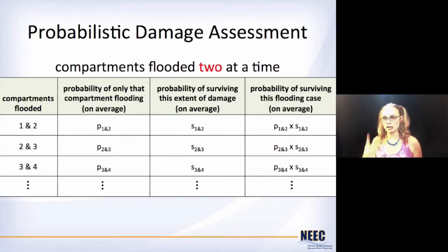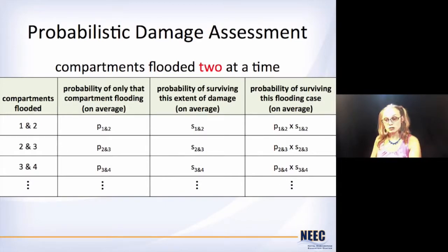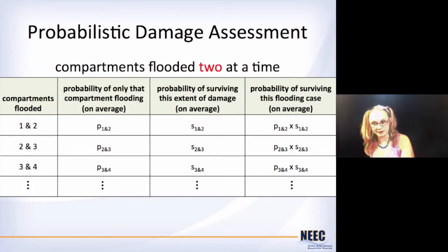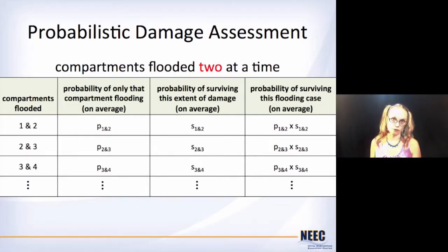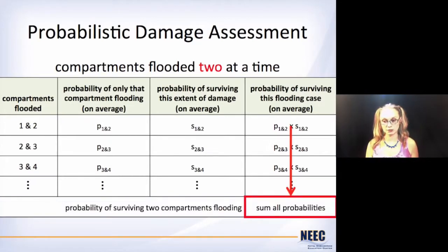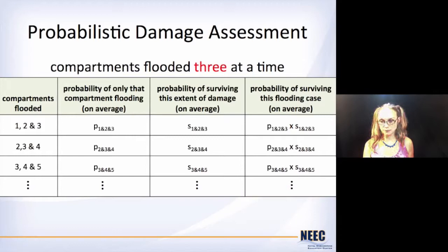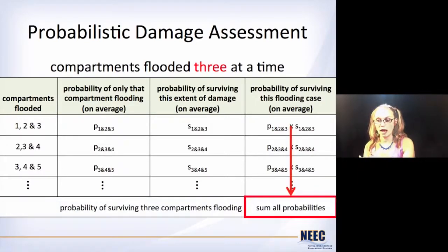Do the same thing, but now look at two compartments. So now we've got compartments one and two — what's the probability that both of those compartments flood at the same time, and then what are the chances that you're going to survive that? Multiply the two together and that's the probability of surviving that particular flooding case. Do one and two, two and three, three and four — all combinations that you've got. Add all those together and that's the probability of surviving any two compartments flooding at any given time. You can do the same thing for three compartments, four compartments, however detailed you want to get — just keep multiplying these together and adding them up.